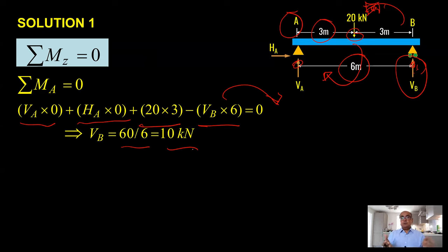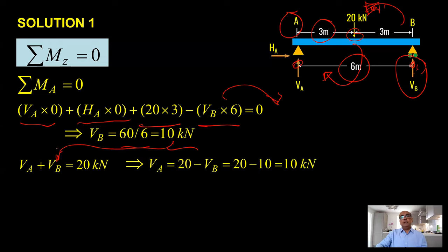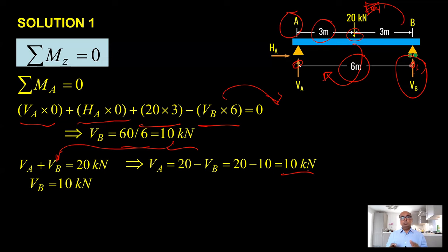With a 20-kilonewton central point load, the load is applied equally at both supports. Since VB is 10 kilonewtons, VA is going to be 10 as well. The summation of vertical forces is 20: putting in the value of VB gives VA equal to 10 kilonewtons and VB equal to 10 kilonewtons. In that way, we found out both reactions. This is one method.